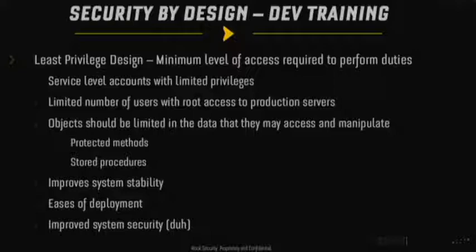Least privilege also applies to how you write your code — your procedures and methods should have limited scope to modify and access data. We see this with private or protected methods and inheritance policies. This helps improve system stability and easier deployment. If you have to run your deployment code as root every time, that's often a sign you're not deploying things as well as you might, and it clearly impacts system security.